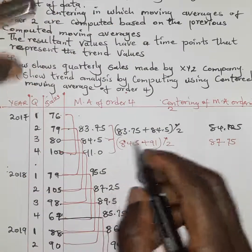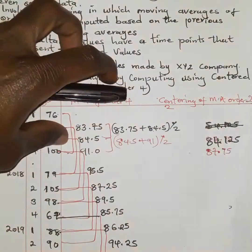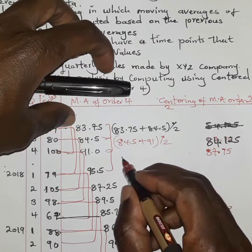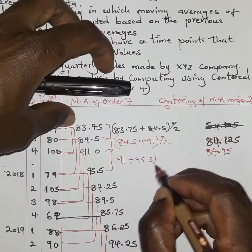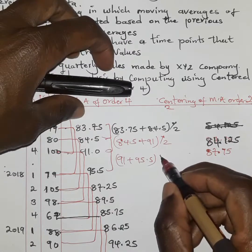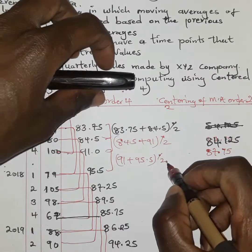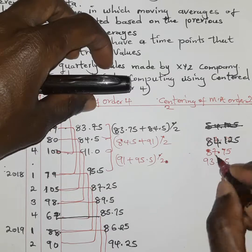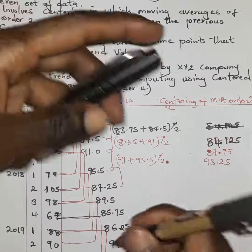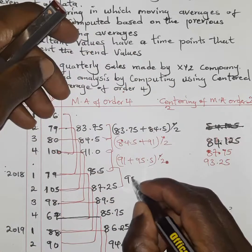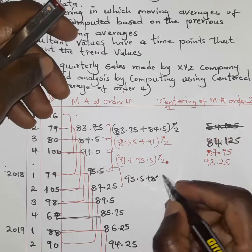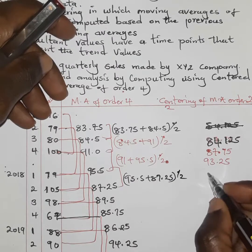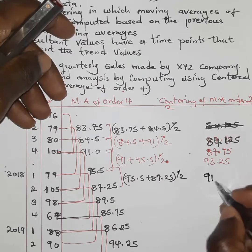Continuing: 91.0 plus 95.5, divided by two, gives 93.25. Then 95.5 plus 87.25, divided by two, gives 91.38. Next, 87.25 plus 89.5, divided by two, gives 88.38.